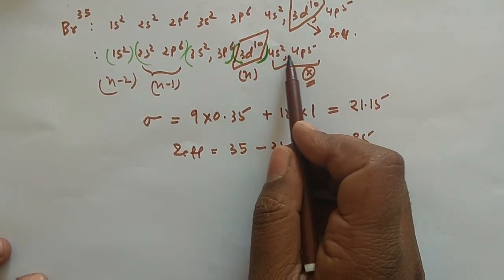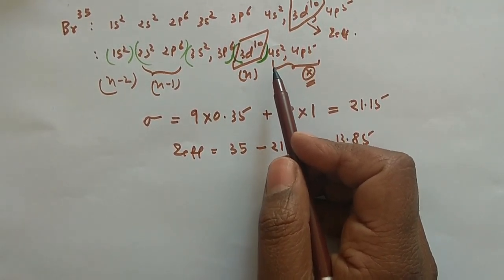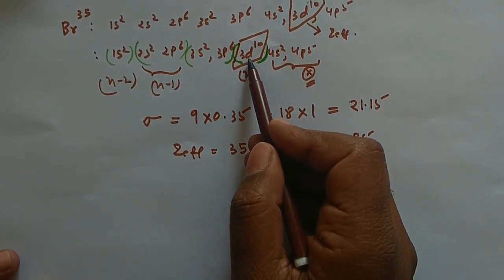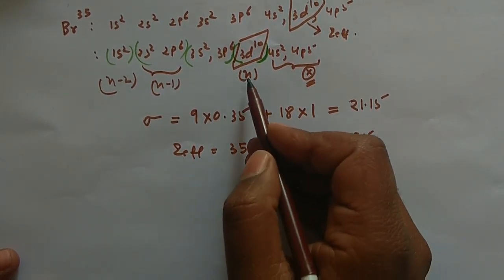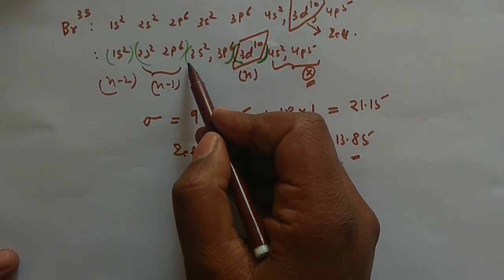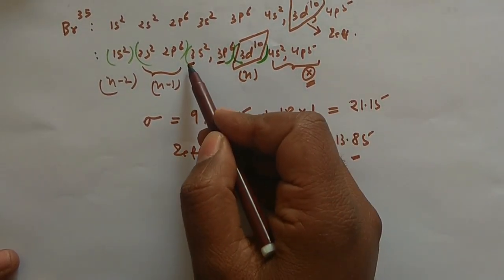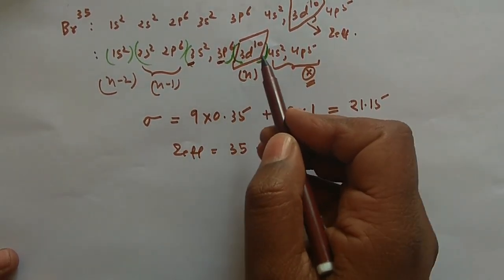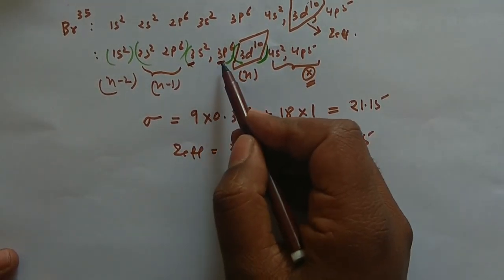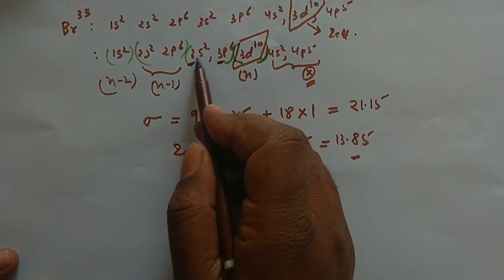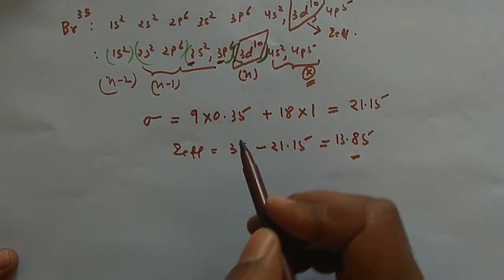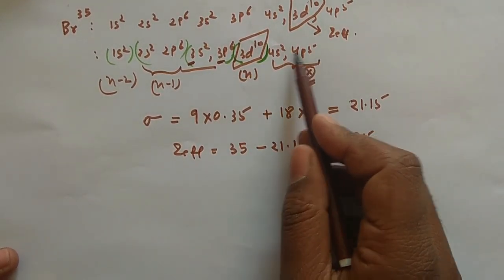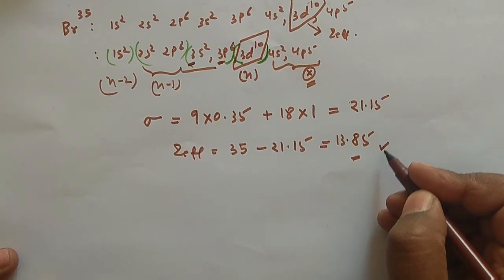One important clarification: when calculating for a D orbital electron, you treat the D orbital as the n shell separately from the S and P orbitals of the same principal quantum number. The 3s² 3p⁶ orbitals, even though they share principal quantum number 3, are treated as n−1 for the 3d reference electron, and their contribution is multiplied by 1.0, not 0.35. This is how you correctly apply Slater's rules for bromine's 3d electron.